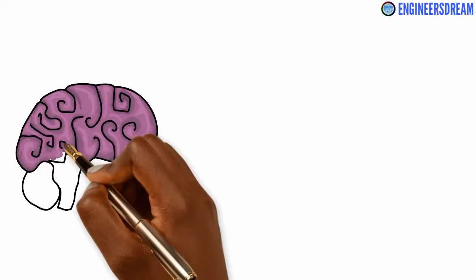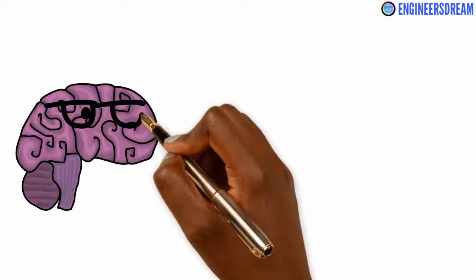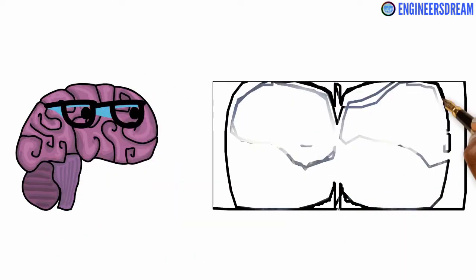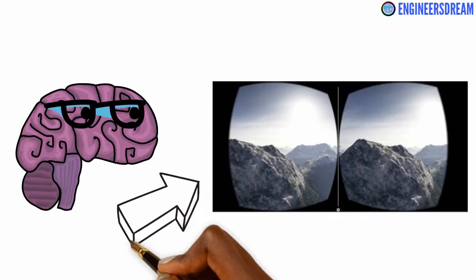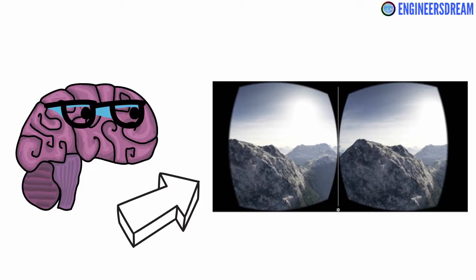To conclude, in VR your brain is basically tricked into thinking that the artificial reality is your actual reality. Next, let's look at the different VR headsets in detail.